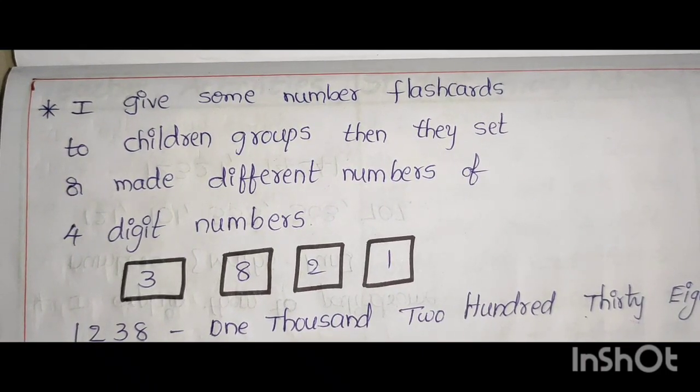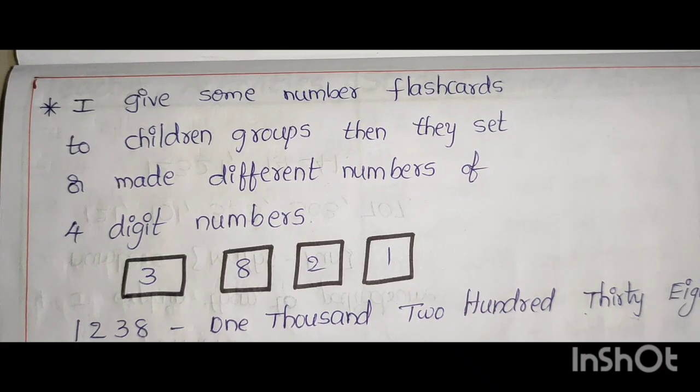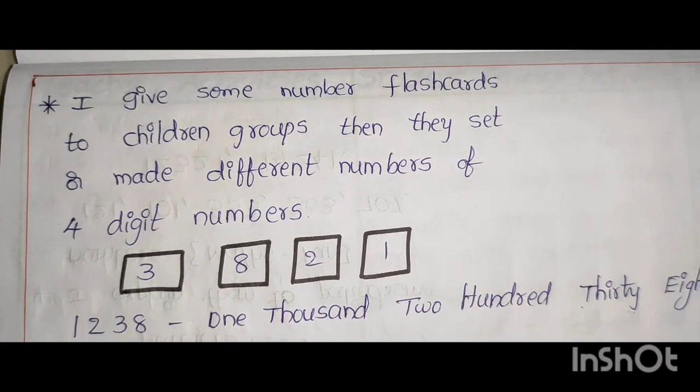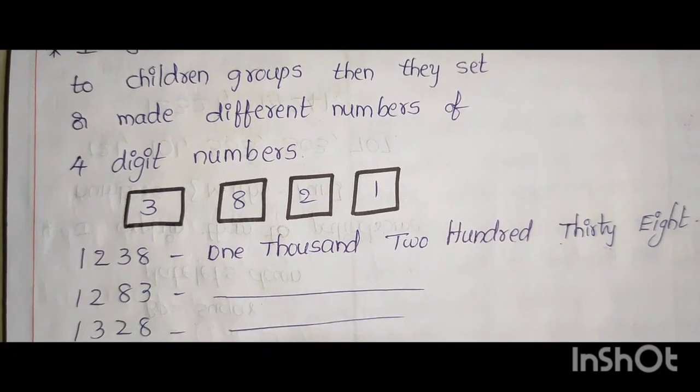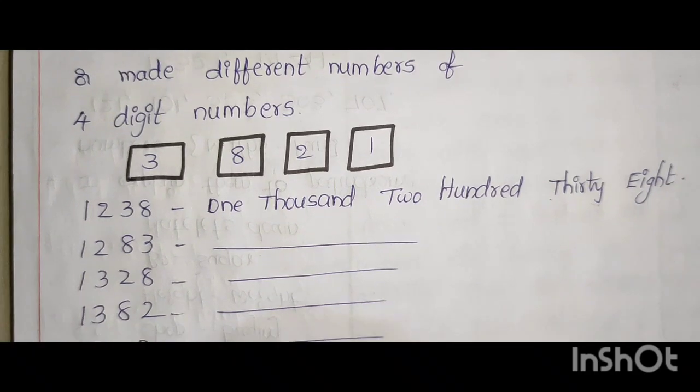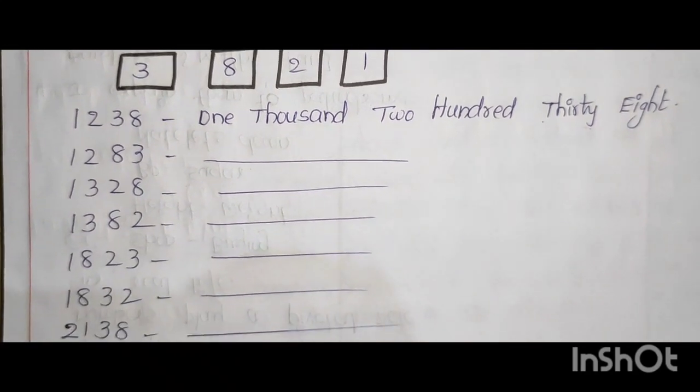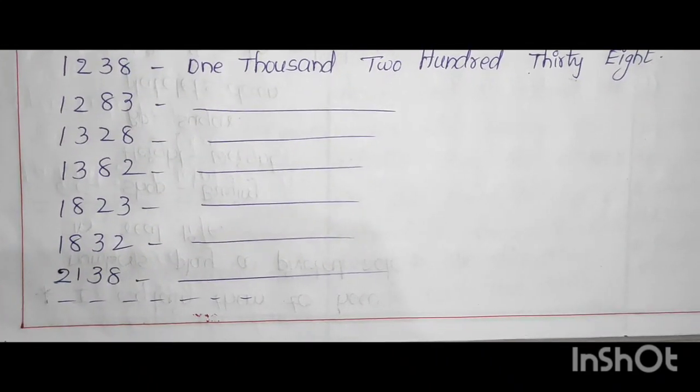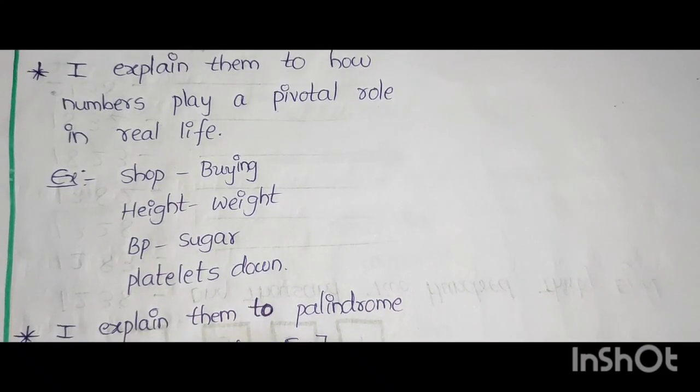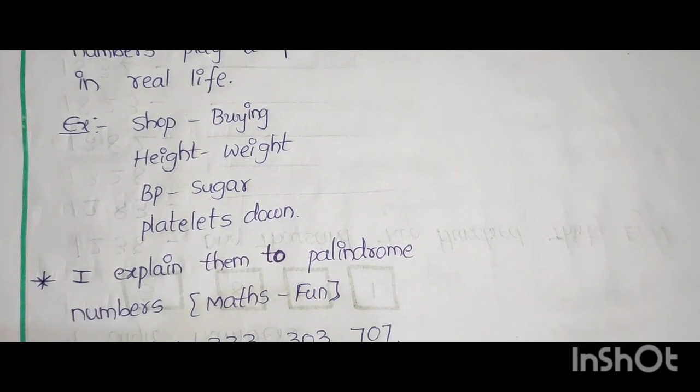I give some number flashcards to children, groups. Then they set or made different numbers of 4 digit numbers. 3, 8, 2, 1. Like these numbers. They making more 4 digit numbers with using flashcards.